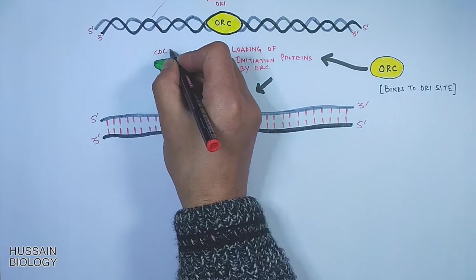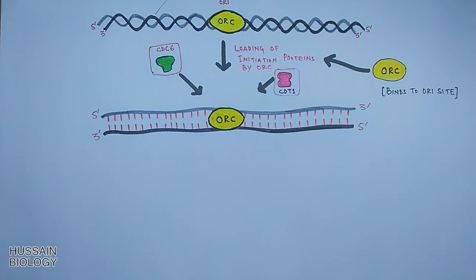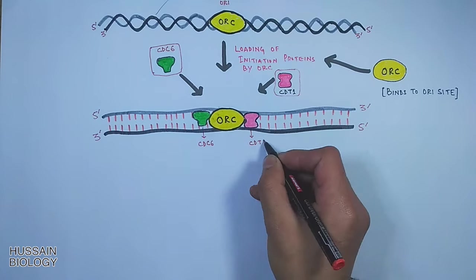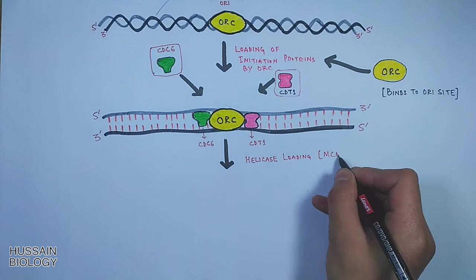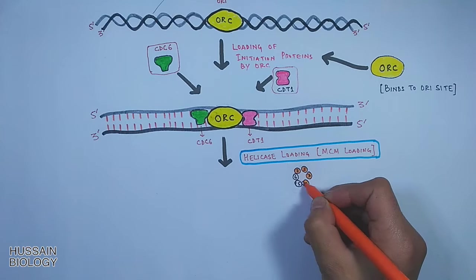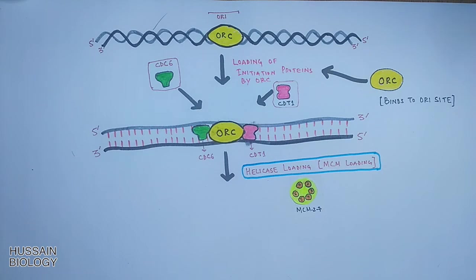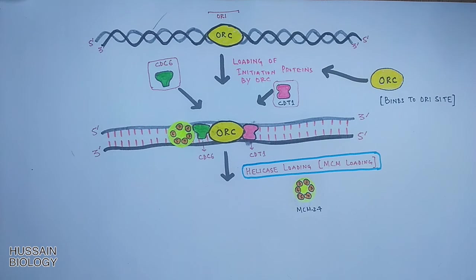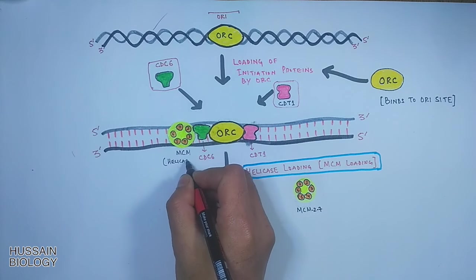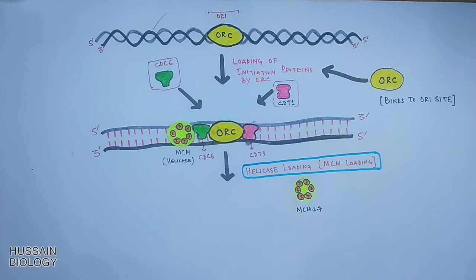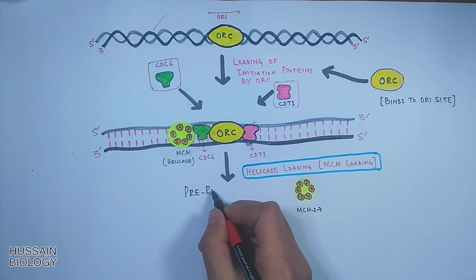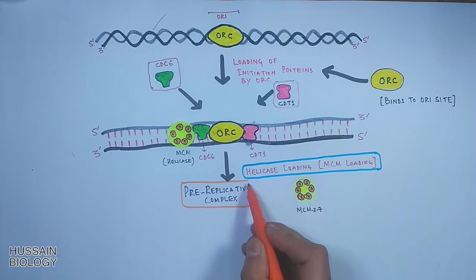The first two proteins recruited by ORC are the cdc6 and cdt1 protein, as you can see in this diagram. Now the cdc6 drives the loading of mcm protein, that's helicase enzyme. And the cdt1 induces the topological changes in DNA with which mcm ring is associated firmly with DNA, thus concluding the helicase loading.